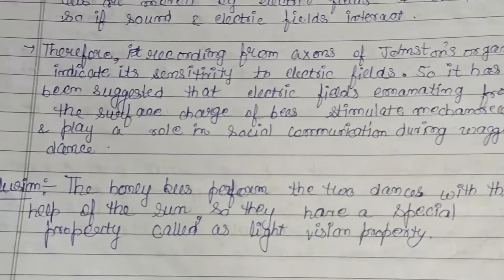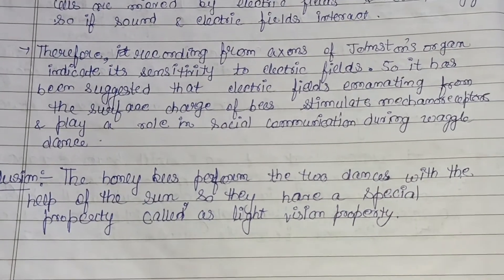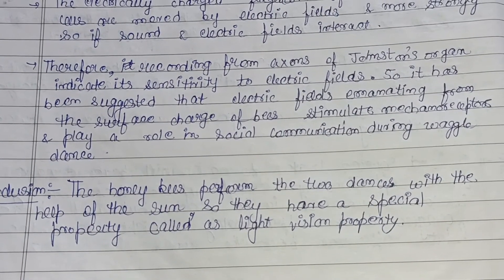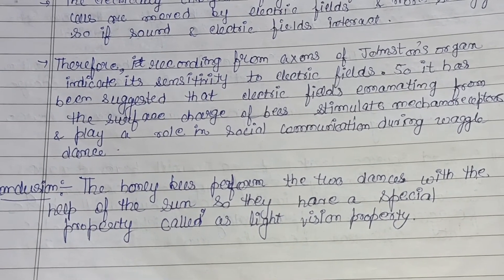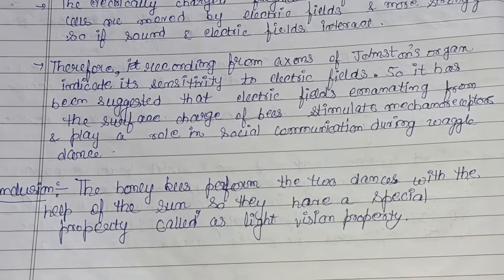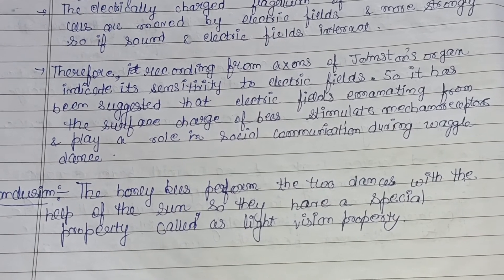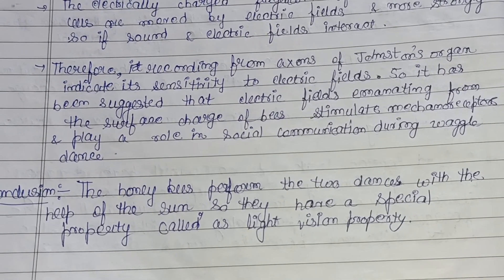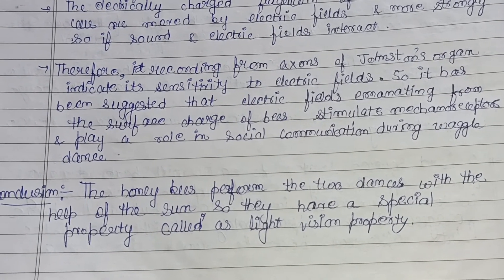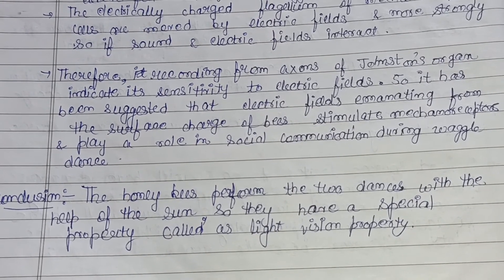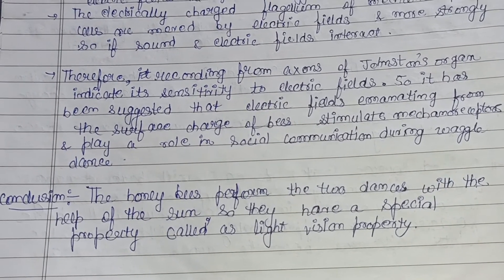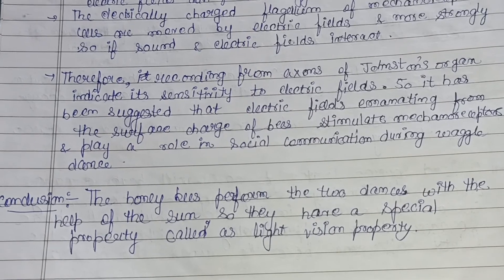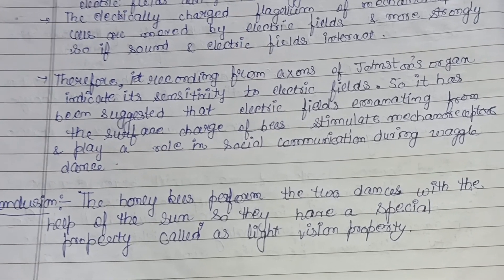In conclusion, honeybees perform two dances with the help of the sun, and they have a special property called light vision. That is all about the language of honeybees, or communication in honeybees. Hope you liked this video — please do like, share, and subscribe to my channel.